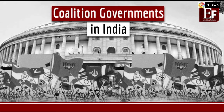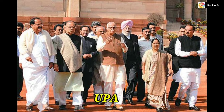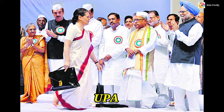Coalition governments are usually not stable because the survival of the government depends on the support of all the members of the coalition. As the parties making up the coalition disagree on many issues, some members withdraw support, leading to the fall of the government. The United Progressive Alliance, UPA, a coalition of 15 political parties, was formed after the 2004 general elections as no party won a majority.